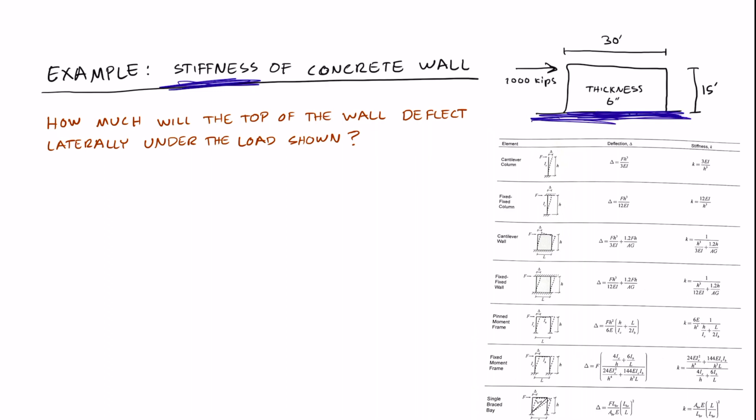We're going to apply a load of 1,000 kips to this concrete wall. And we're going to find the stiffness and how much the wall deflects laterally under the 1,000 kip load.